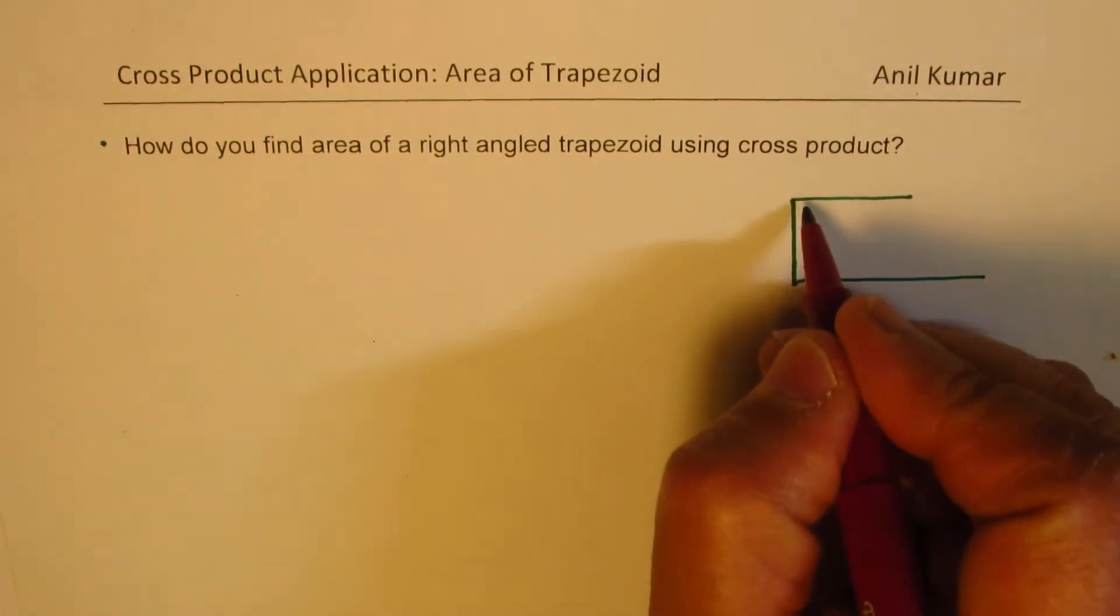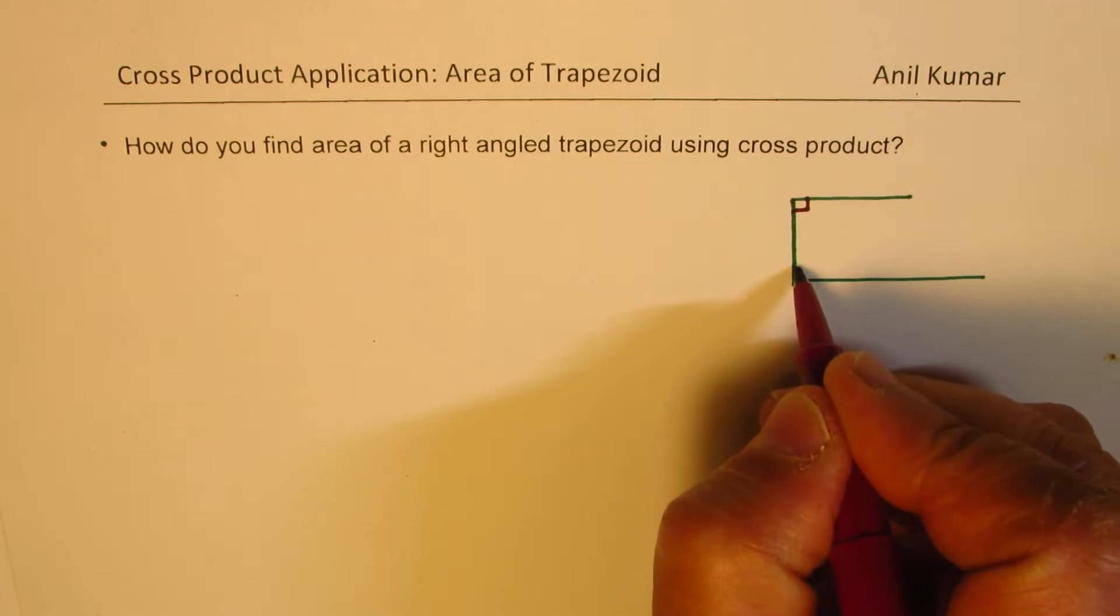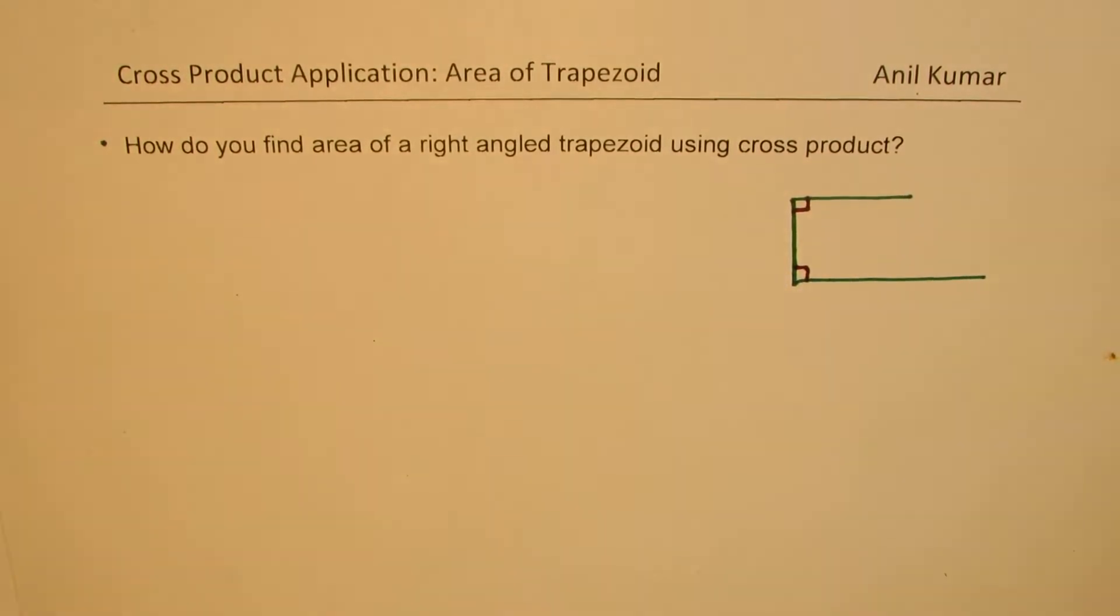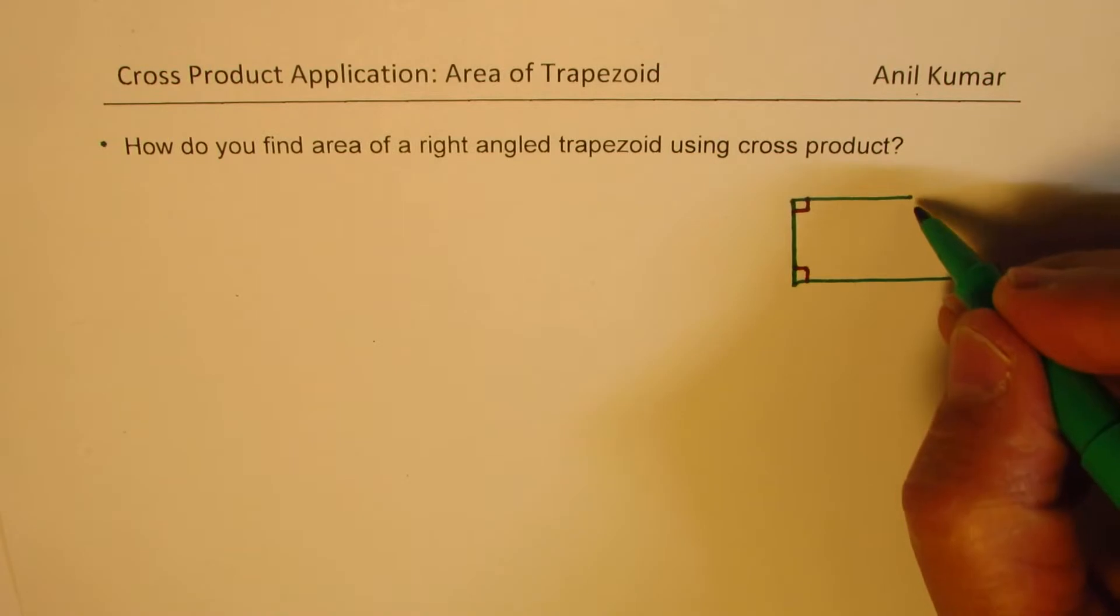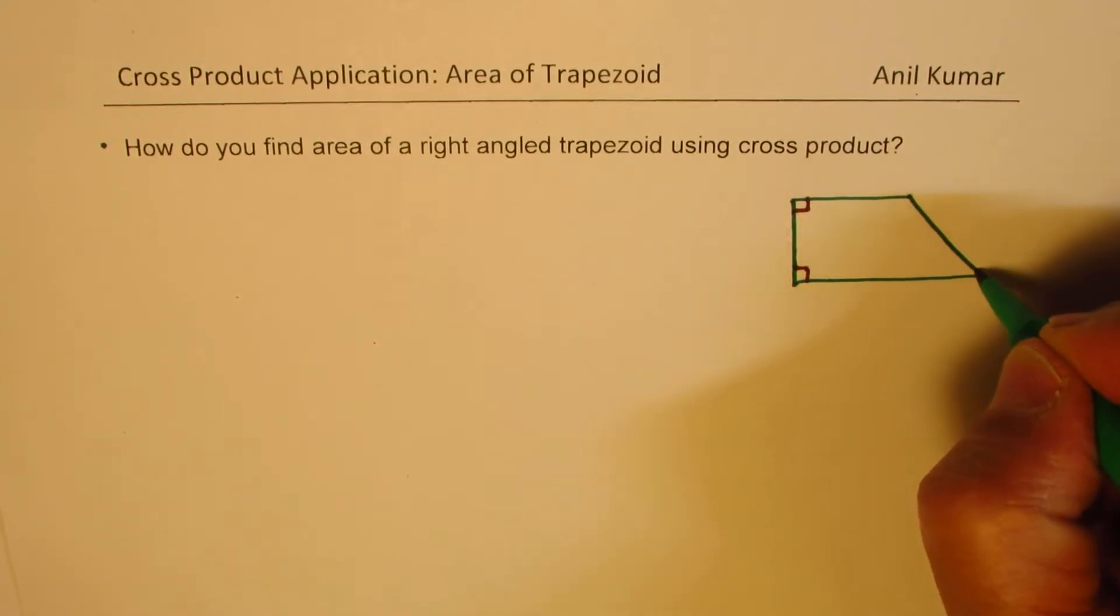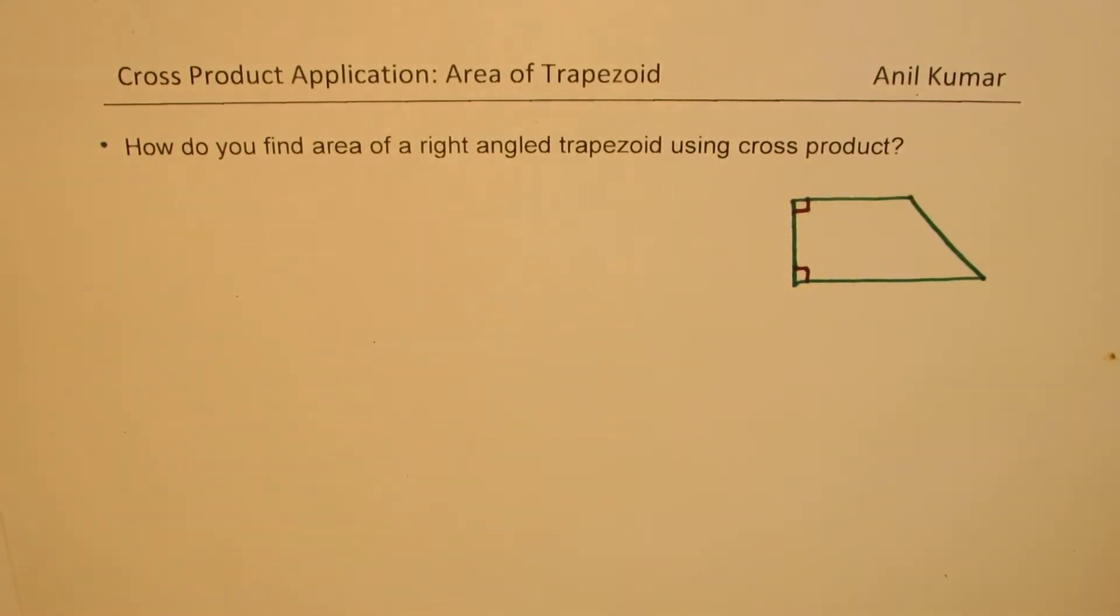We have two right angles as shown here. So, that becomes a right angle trapezoid. Let me close this figure. Joining this, so that forms a quadrilateral as shown here.